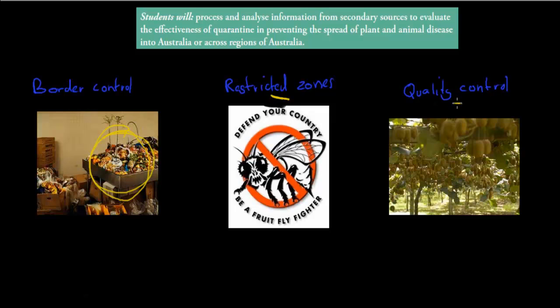We also have quality control measures. For example, if we have an import - that means we bring items in from, let's say, New Zealand, so it's from outside Australia - we want to make sure that the chance of infection or disease is as small as possible. So we tell the New Zealand farmers to use different types of pesticides and control measures to make sure there's no disease on their products. That's quality control. All these measures try to minimize the risk of disease entering Australia.